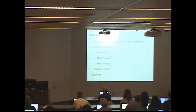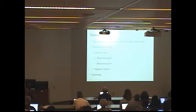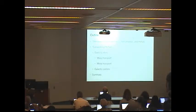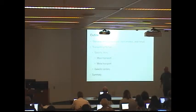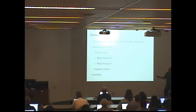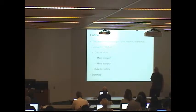Here's the outline of the talk. I want to start with what we know about the radial distribution of gas, star formation, and metals in galaxies in the local universe, because that's really the thing I want to focus on trying to make sense of — how did galaxies get into their current shapes? Then I'll talk about how stuff gets moved around in galactic disks, the transport of mass and metals, what happens at the very centers of galaxies, and then I will summarize.